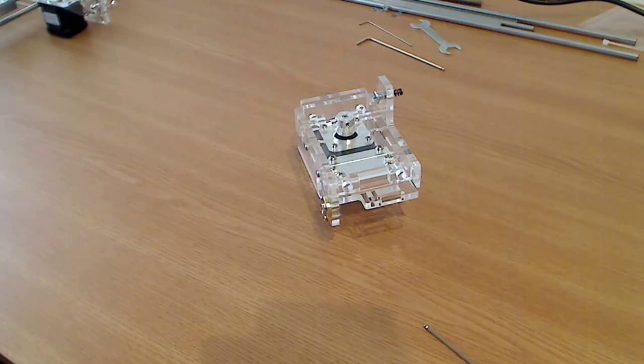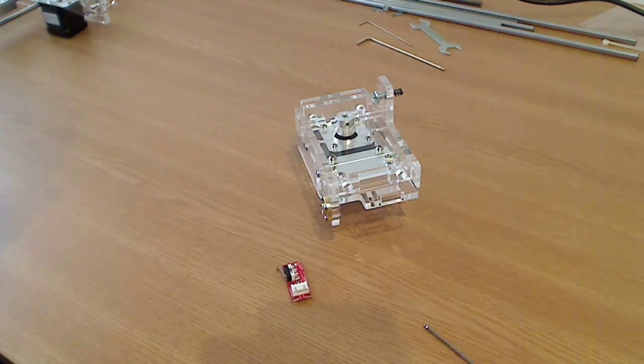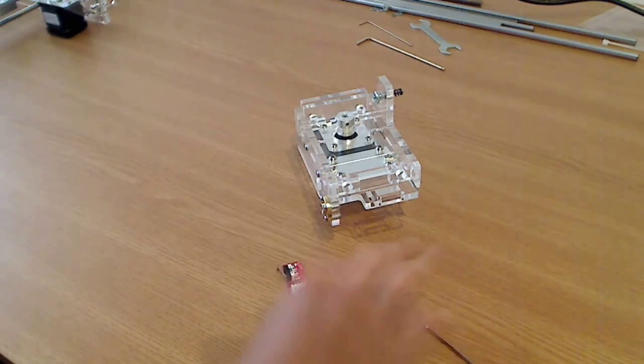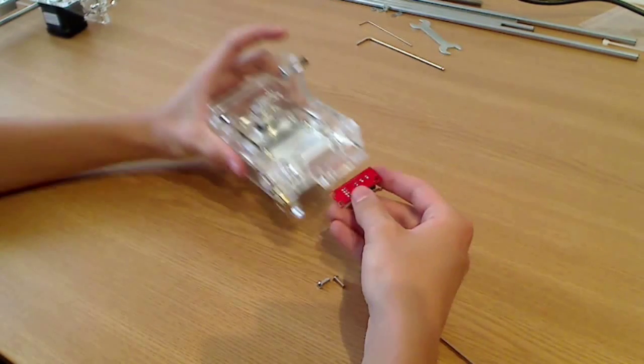Now we need an end-stop red board, two M3 10mm screws and two M3 nuts. And we mount the red board on the motor side, like this.